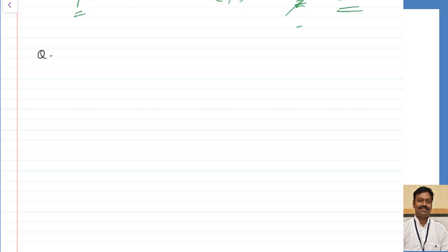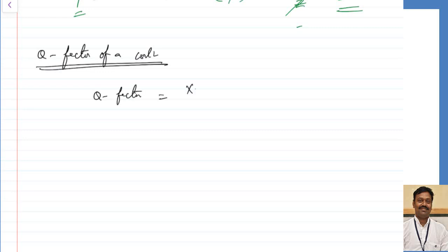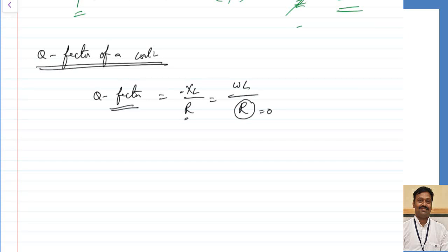Let us now see what is the Q factor of a coil. The Q factor indicates the quality of the coil. The quality factor is defined as the ratio XL/R. Ideally, I want XL to be infinite because any coil I design should be a pure inductor, but practically some resistance is always included. A higher Q value means better quality of the coil — more inductance relative to resistance.